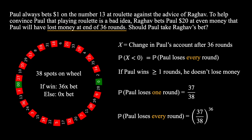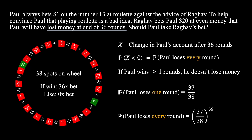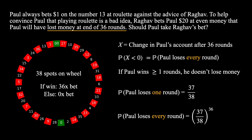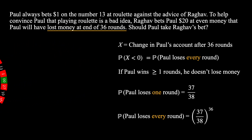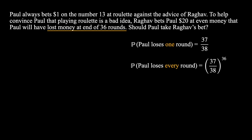Now let's find the expected value of a single round. We know that there's a 37 out of 38 chance that we lose a dollar, and a 1 out of 38 chance that we gain $36. Thus, the expected value of a single round is minus 2 divided by 38.